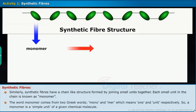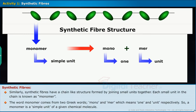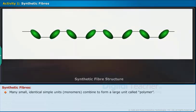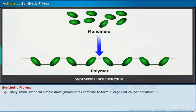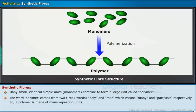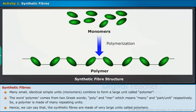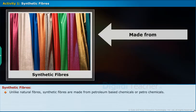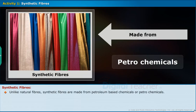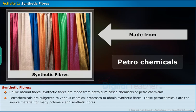The word monomer comes from two Greek words — mono and mer — which means one and unit respectively. So, a monomer is a simple unit of a given chemical molecule. Many such identical simple units called monomers combine to form a large unit called a polymer. The word polymer comes from two Greek words — poly and mer — which means many and unit respectively. So, a polymer is made of many repeating units. Hence, synthetic fibers are made of very large units called polymers. Unlike natural fibers, synthetic fibers are made of petroleum-based chemicals or petrochemicals, which are subjected to various chemical processes to obtain synthetic fibers.